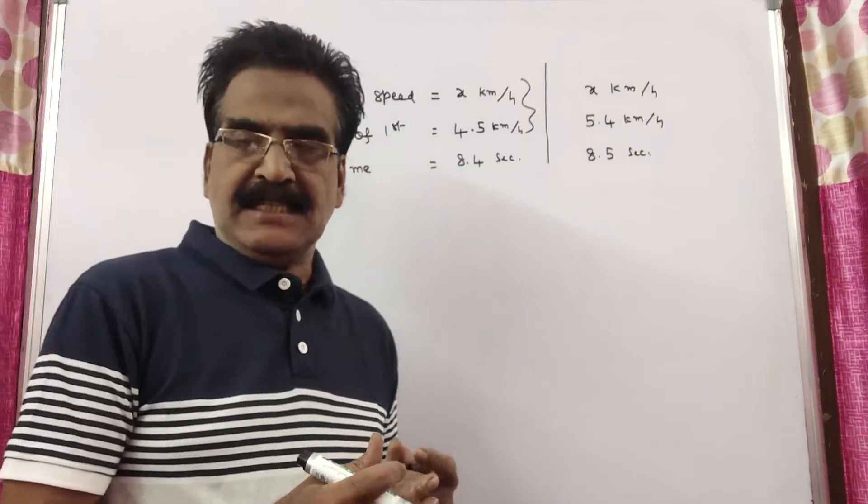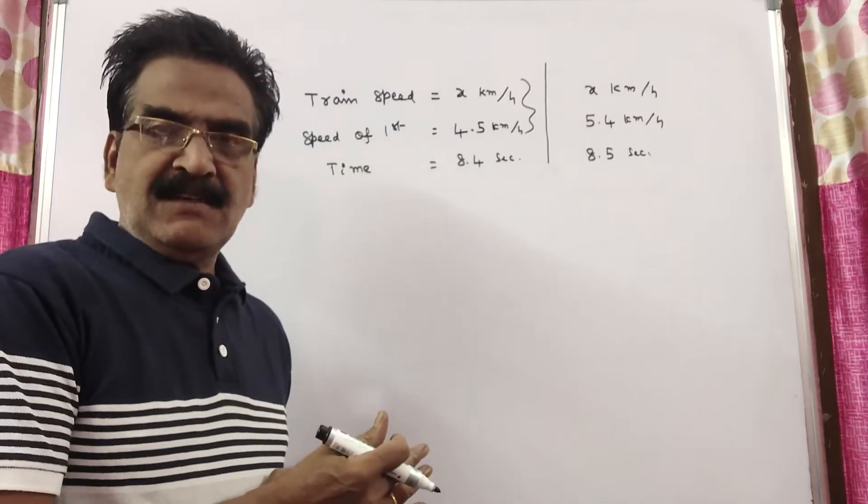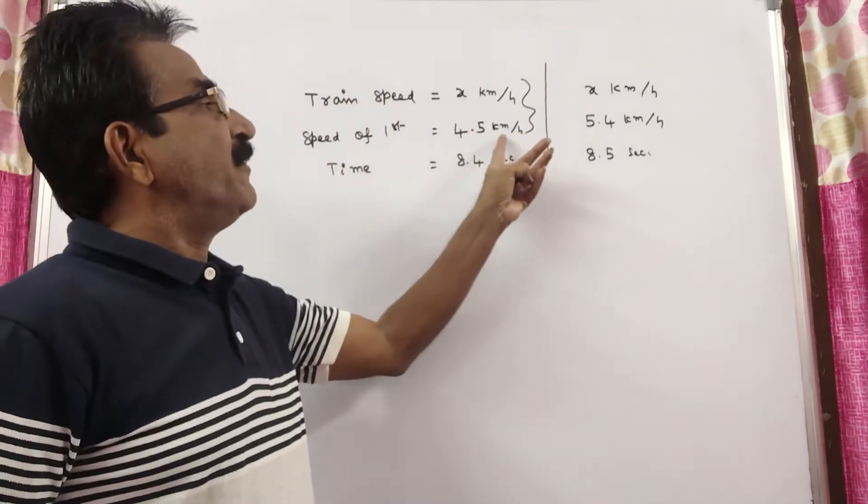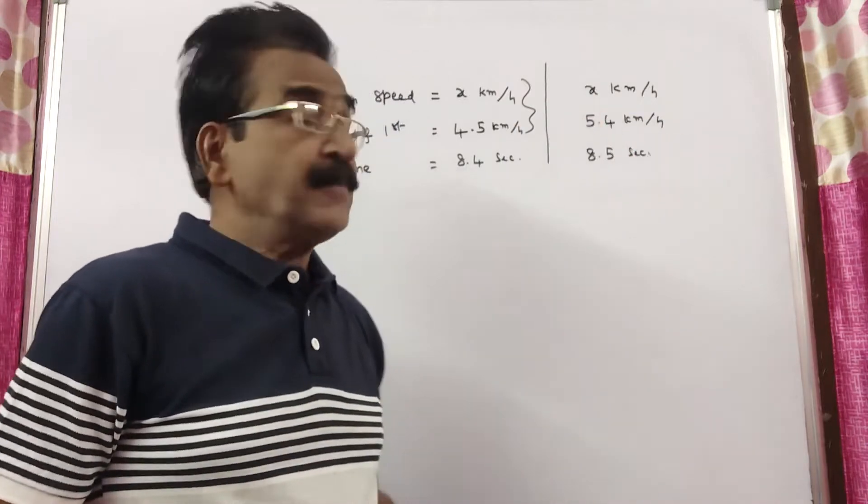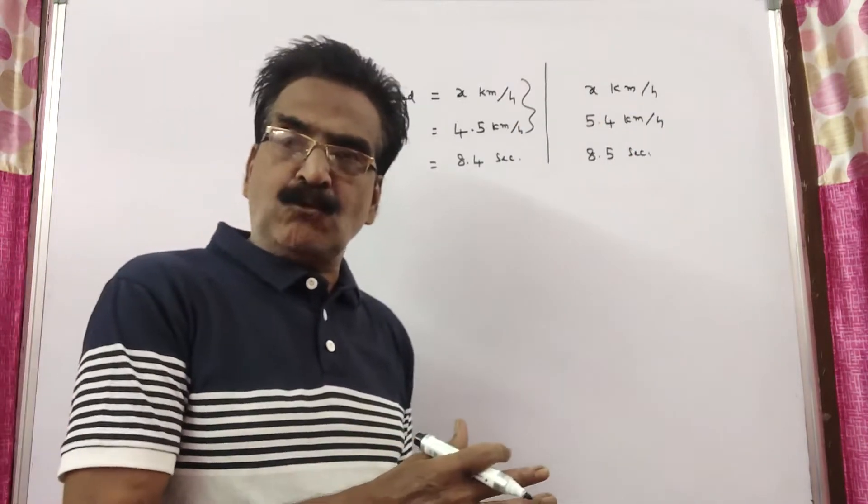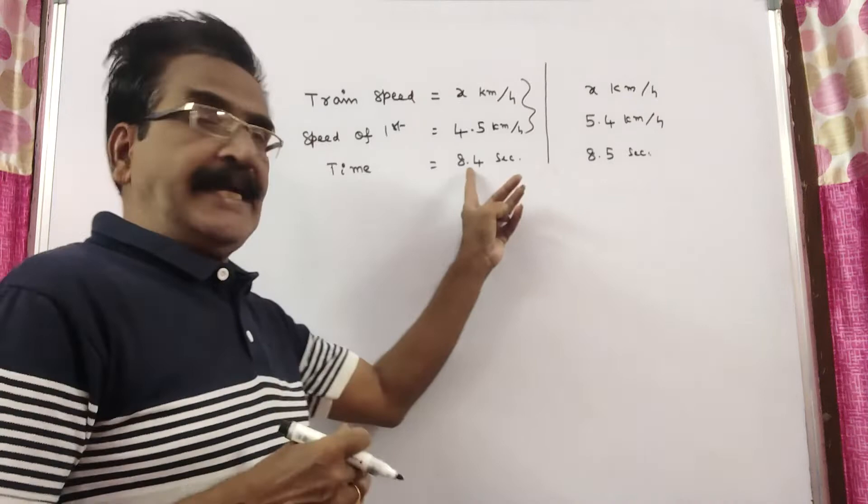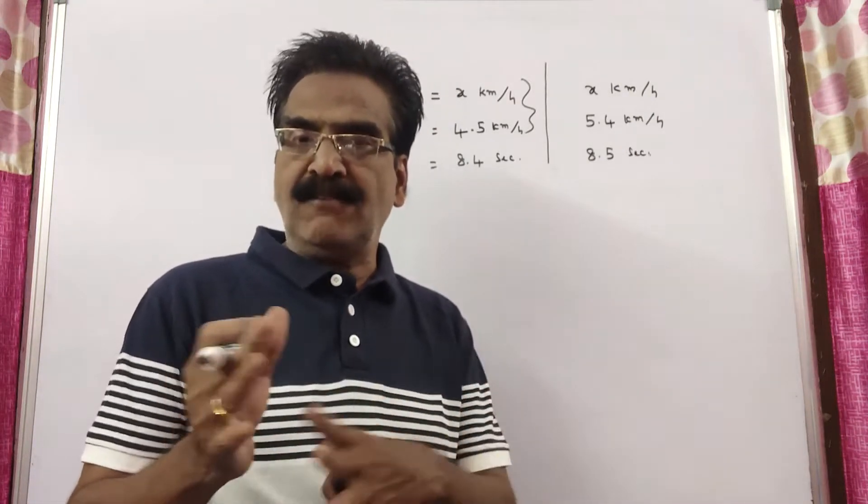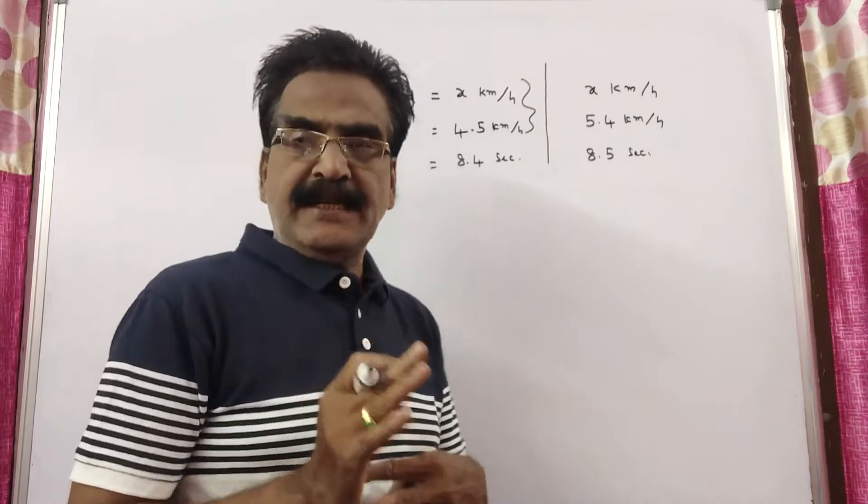Friends, a train overtakes 2 persons walking in the same direction of the train with 4.5 kmph and 5.4 kmph speeds. The train overtakes these 2 persons in 8.4 seconds and 8.5 seconds. What is the speed of the train?